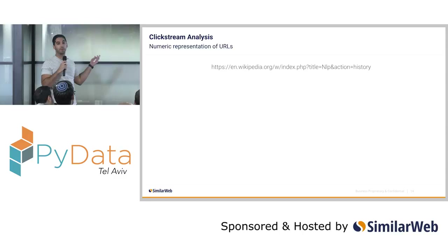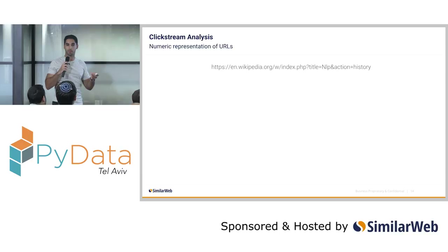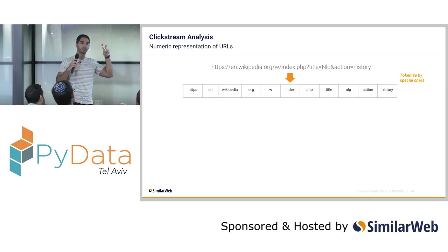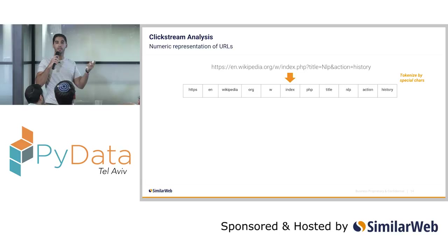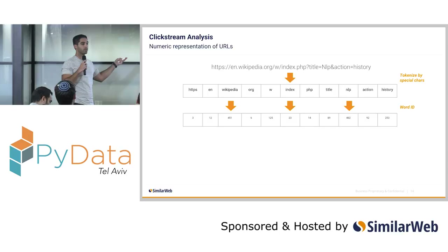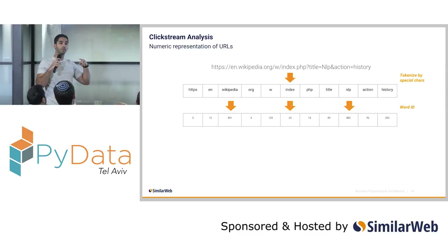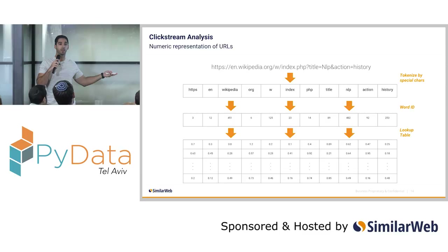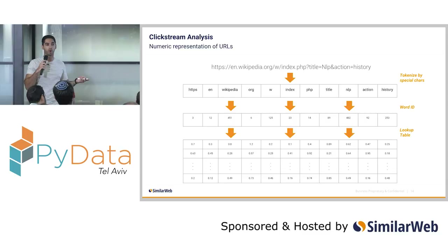How can we apply it on URLs? Let's say we have a Wikipedia page and want a numerical representation. In normal language, we tokenize by commas, spaces, and dots. Here we can do tokenization by special characters — dots, backslashes, question marks — and actually get the words that compose the URL. If I do it on all URLs in my corpus, I can construct a vocabulary, get the word ID for each word, and since I've already constructed an embedding matrix the size of the vocabulary — randomly initialized — I can get a corresponding vector for each word ID. Eventually I get a matrix representation of that URL, which I can use with any statistical tool for classification or NLP tasks.